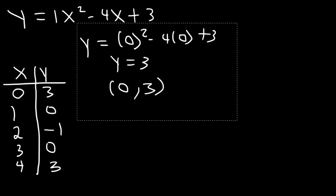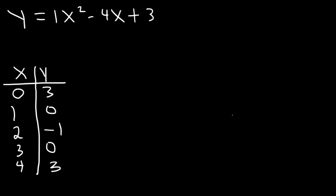Now we have everything we need to graph this function. Let's plot it. Starting with the vertex at (2, -1), and then the x-intercepts at (3, 0) and (1, 0). That's where it touches the x-axis.